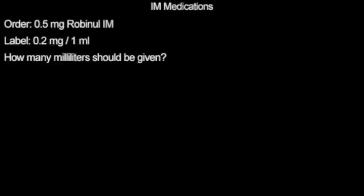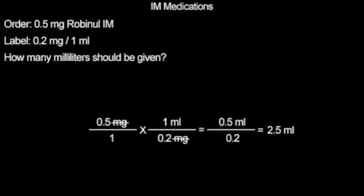Pause the video, try this problem on your own, and continue when you are ready for the answer. 0.5 milligrams of Robinul IM at 0.2 milligrams per milliliter comes out to being 2.5 milliliters per dose.